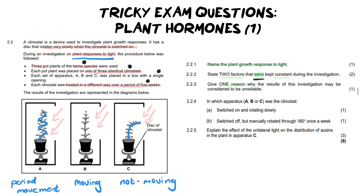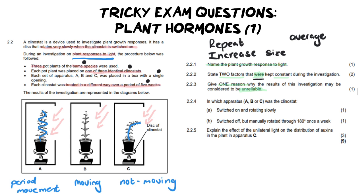The next question says: give one reason why the results of this investigation may be considered unreliable. We don't see that phrasing so often — we usually see questions asking what was reliable about an experiment. So we need to look back at the paragraph and see what they did not do which could have affected reliability. When it comes to reliability, we speak about repeating an experiment, increasing sample size, and calculating an average. Did they repeat this experiment? The answer is no, so one answer is: the investigation was only done once or not repeated.